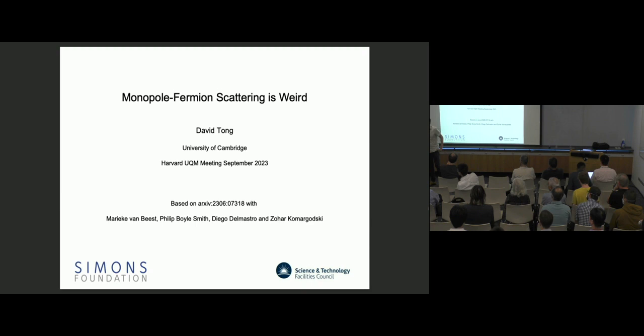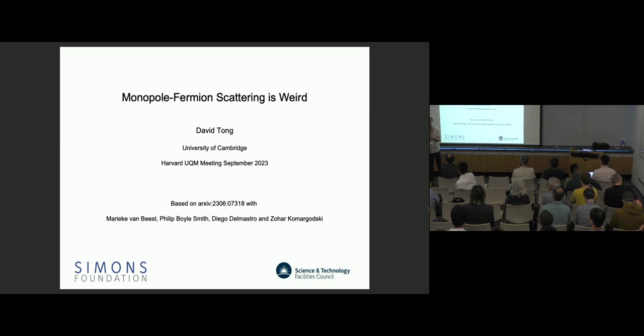The problem is that it appears there are no outgoing states that carry the right quantum numbers, including in the standard model. That's very, very confusing. It's been a problem for almost 40 years. What I'd like to do is largely spell out the problem for you, and then in the second part of the talk tell you about some progress — maybe it's a resolution, maybe it's a path towards a resolution.